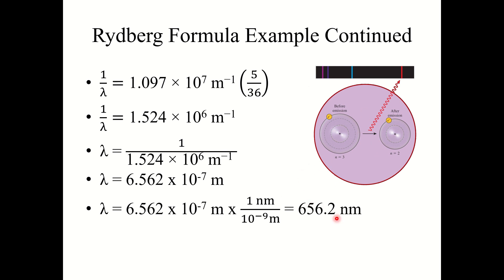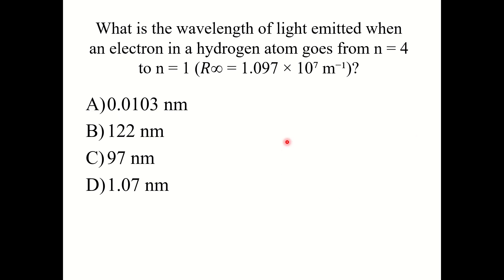That is around the wavelength of red light. So that red light in hydrogen's emission spectra comes from an electron falling from the third energy level to the second energy level.